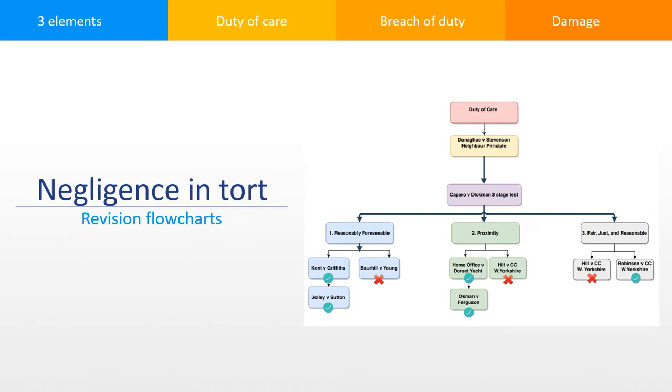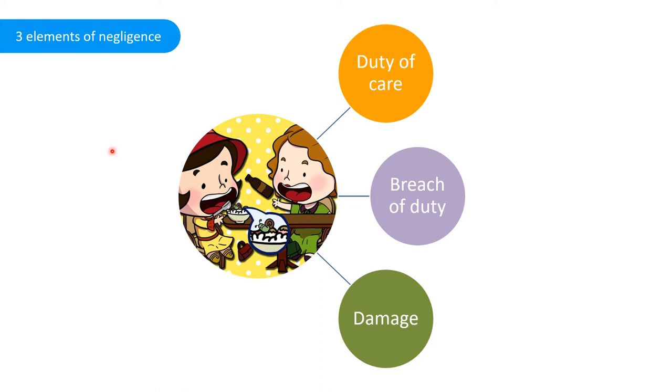Before we look at the flow charts, let's remind ourselves of the key elements. In the tort of negligence, civil liability is based on establishing three principles: duty of care, breach of duty, and damage. Once all of these principles are established, compensation may be paid out to our claimant, which aims to put them back into the position that they would have been in before the damage occurred.